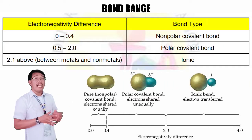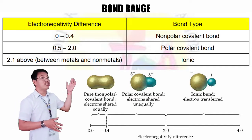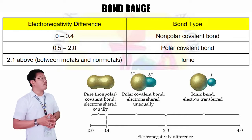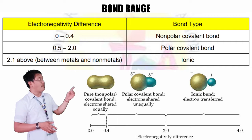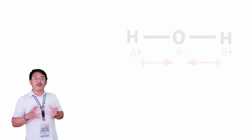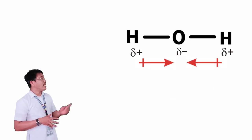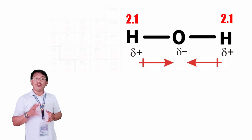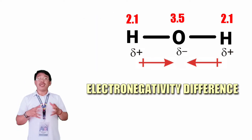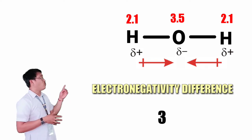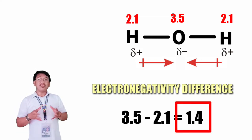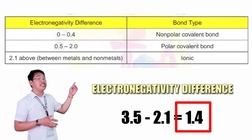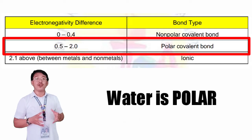So we have to remember this bond range. If the electronegativity difference ranges from 0 to 0.4, the type of bond is non-polar covalent. 0.5 to 2.0, it is a polar covalent bond. And when the value is 2.1 and above, the molecule is in an ionic bond. Now, let's use water as an example again. The electronegativity value of hydrogen is 2.1 and oxygen is 3.5. To get the electronegativity difference, we simply subtract 2.1 from 3.5. This becomes 1.4. So since the value is 1.4 and is within the 0.5 to 2.0 bond range, water is polar.